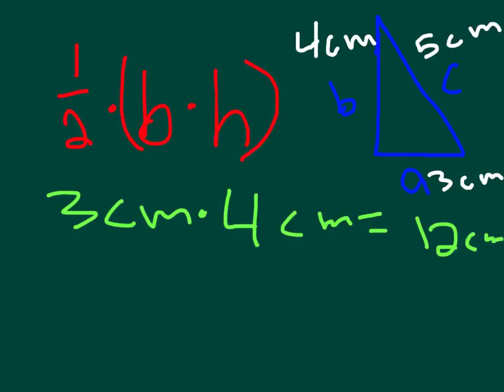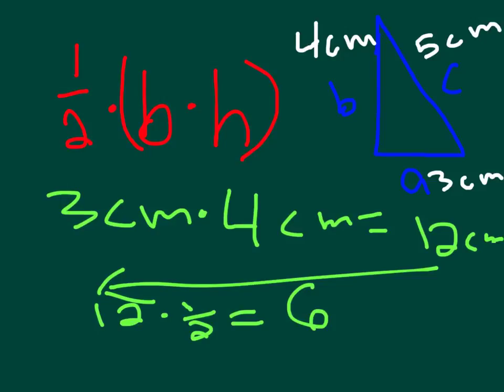That means that now we have to find one half of 12. One half of 12 is 6 centimeters squared. That is our answer for the area of this triangle.